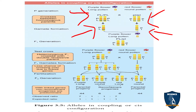In F1 you get a heterozygous condition — capital P small p, capital L small l — that is purple flower with long pollen in heterozygous condition. Now this F1 purple flower long pollen heterozygous (PpLl) is crossed with the recessive parent, which is called a test cross.